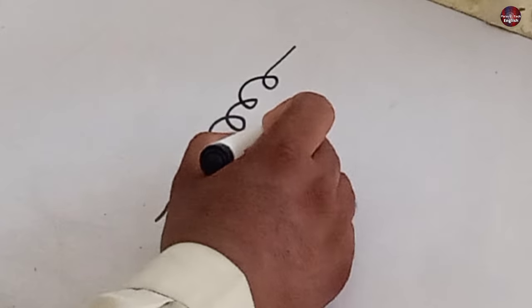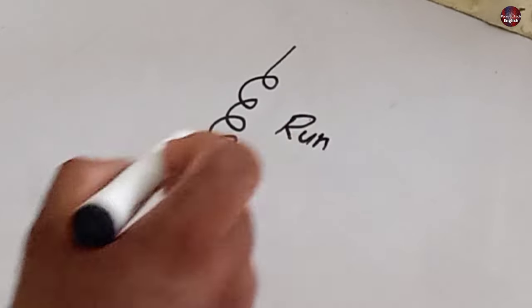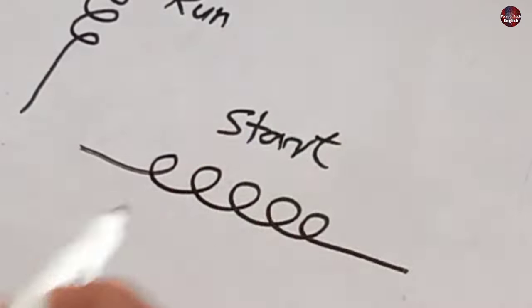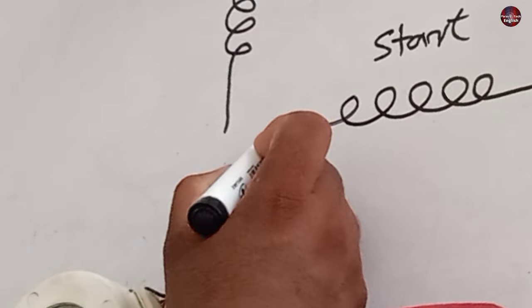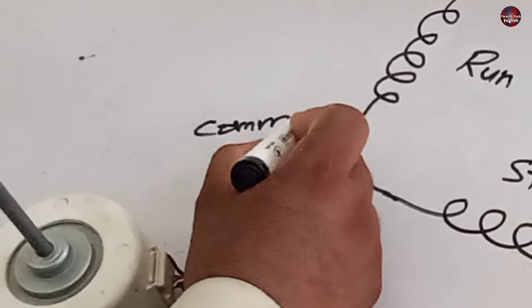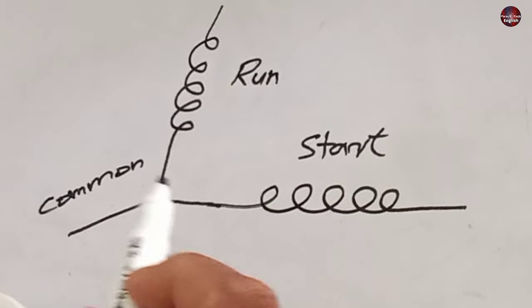This is the first winding, which I will name as run winding. Then this motor has a second winding, which I have named as start winding. One end of these windings is connected with each other. This end will be named the common point. This is how the motor is connected internally.